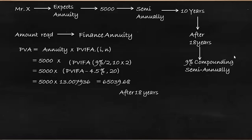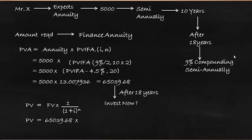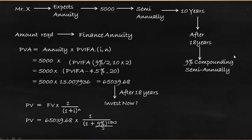The amount to be generated after 18 years is 65,039.68, and we calculate how much should be invested now using the present value formula: PV equals future value multiplied by 1 divided by (1 plus i) to the power of n. Here the future value is 65,039.68, i is 9% divided by 2 since it is compounded semi-annually, and n is 18 multiplied by 2, giving us 1 divided by (1 plus 9%/2) to the power of 36.